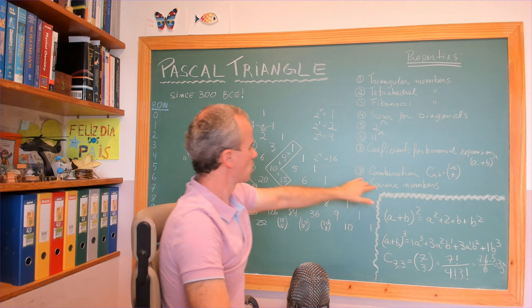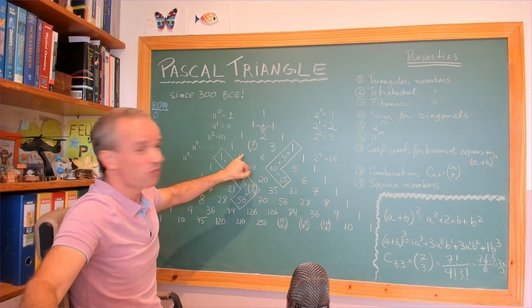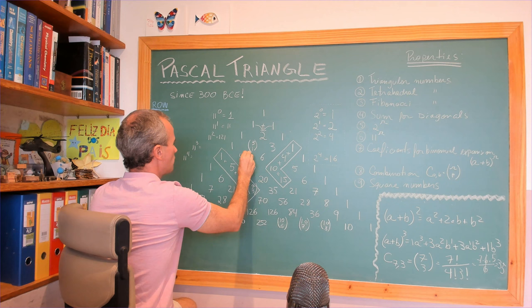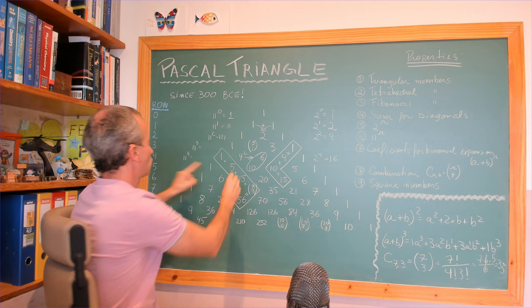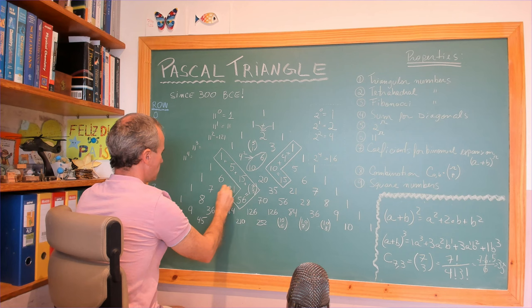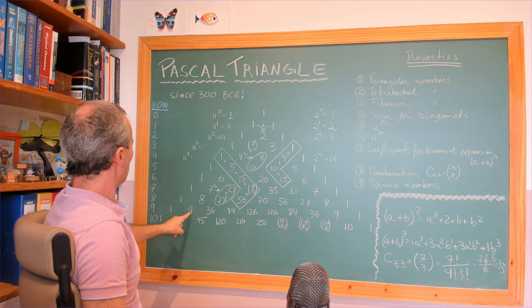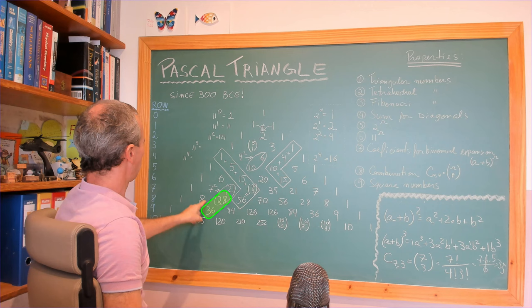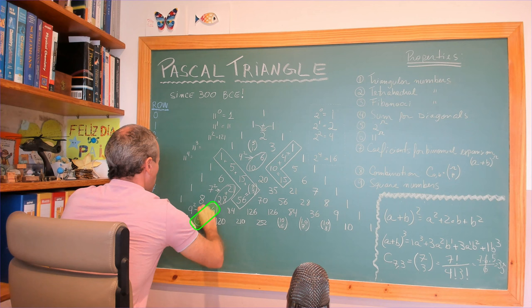Another one you can use is square numbers. The square numbers are fantastic — I love this one, it's so amazing. Four squared is 16 — you can see it here. Five squared is 25. Seven squared is 49. Eight squared is 64 — 64 is going to be the sum of those two. Nine squared is 81 — if you add those: 70 plus 11, 81. Amazing.